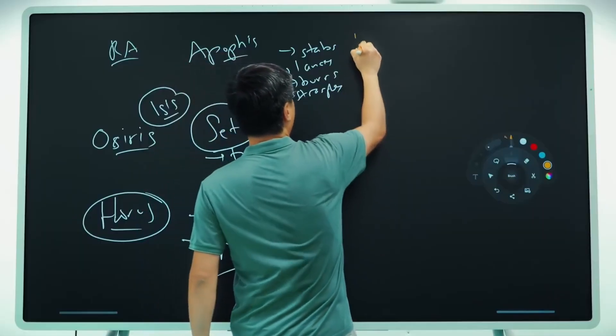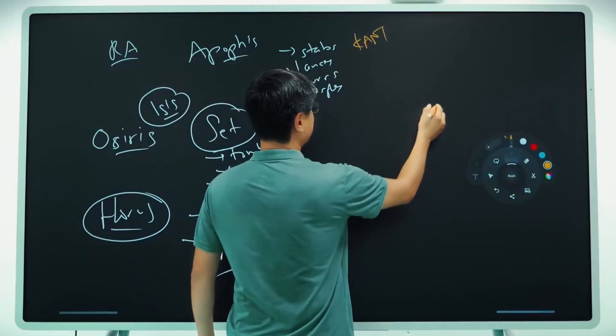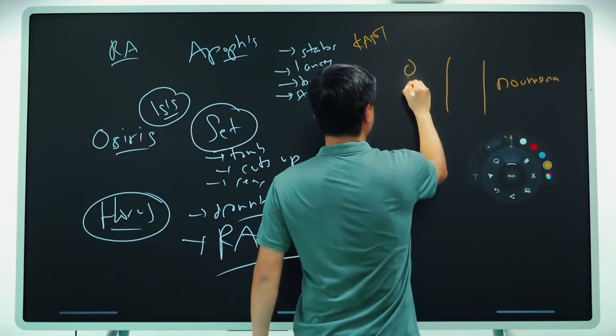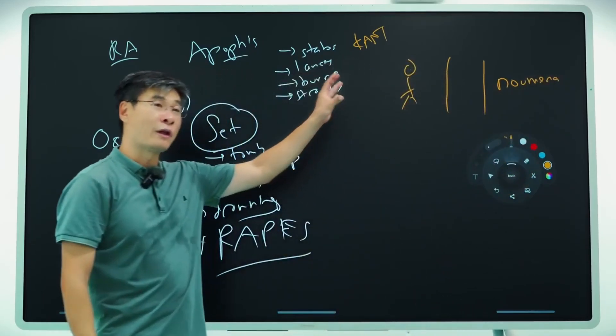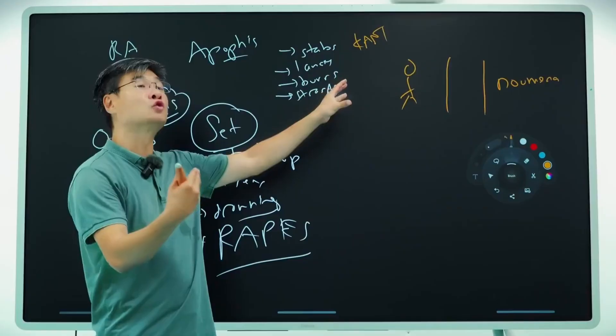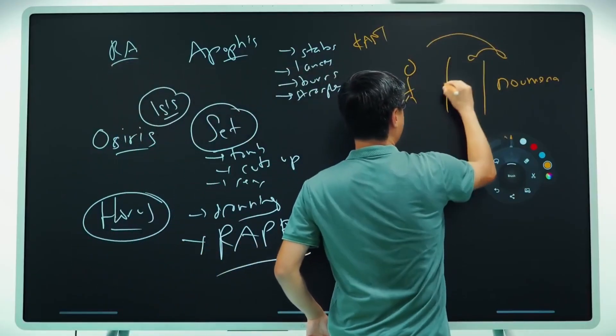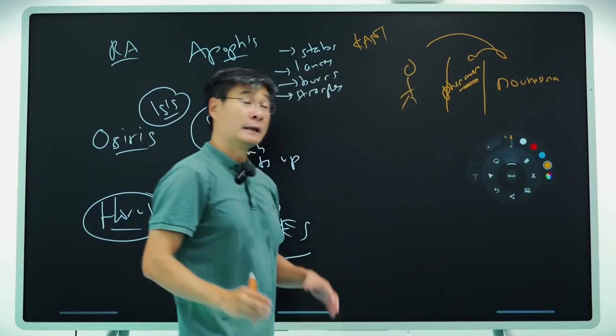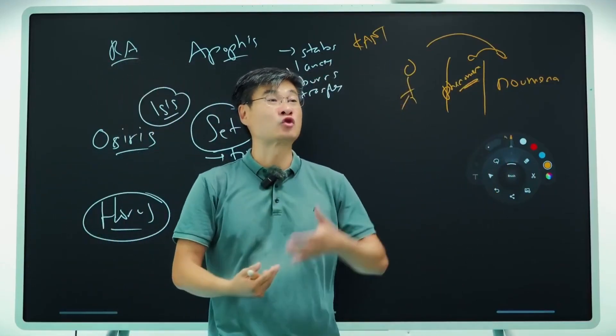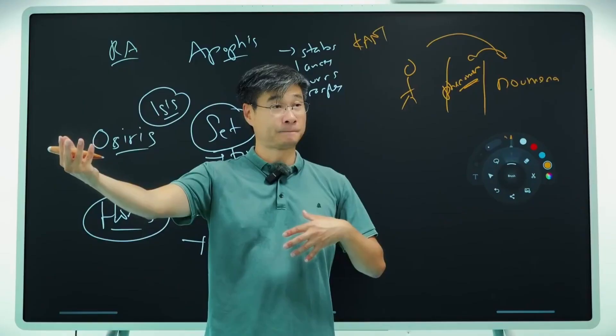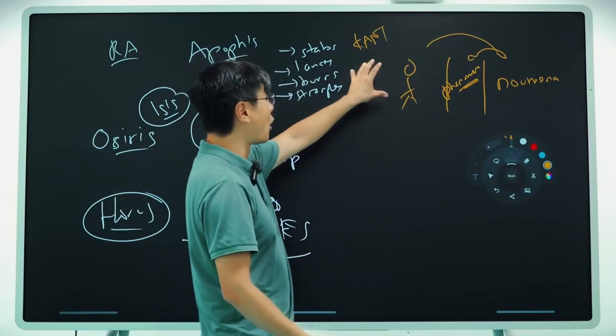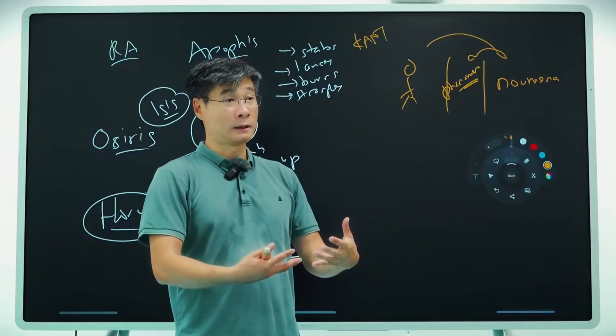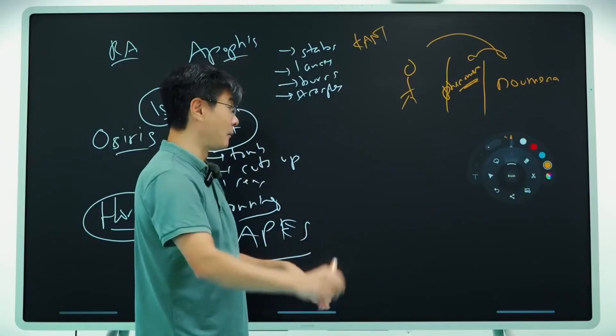So let's go back to Kant. What Kant tells us is that there's something called the noumena, which are the things in themselves. We can never know the things in themselves. We can never know true reality. We can only know the phenomena, which is the things we see. In other words, we cannot differentiate between what is true and what is false. So if you're able to control our experience, you're able to control our memories.